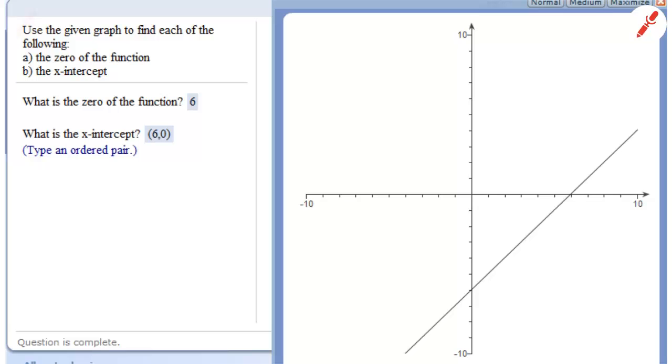Now it says use the given graph to find each of the following. The zero of the function and the x-intercept. And this is a linear function. Well, where this line crosses the x-axis is the zero.